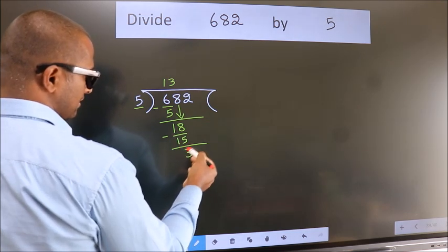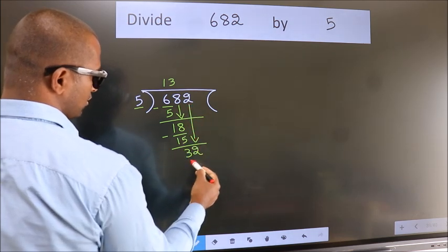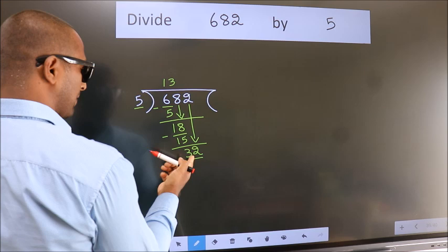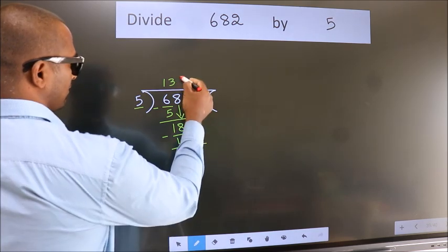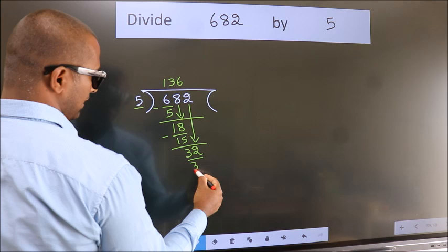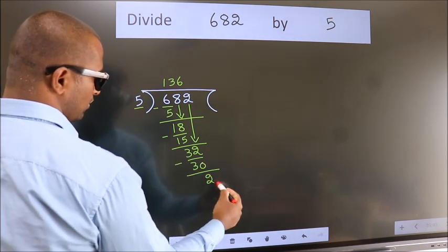After this, bring down the beside number. So 2 down, making 32. A number close to 32 in the 5 table is 5 times 6 is 30. Now we subtract and get 2.